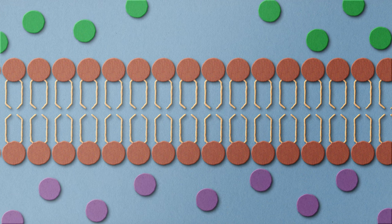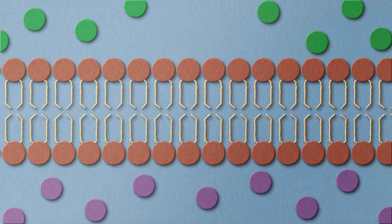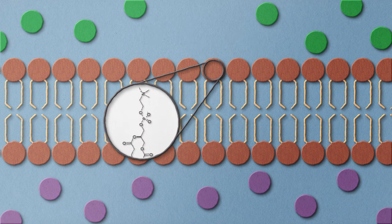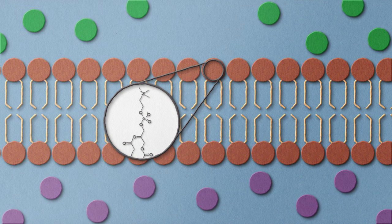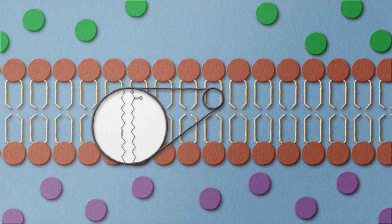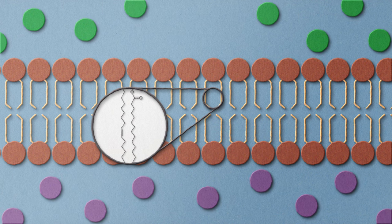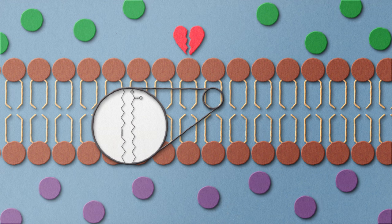Each phospholipid in the cell membrane has a head and a tail. The head is made of a phosphatidylcholine group and is polar or hydrophilic, which means that this part loves water. The tail is made of fatty acids and is nonpolar or hydrophobic, which means that it hates water.